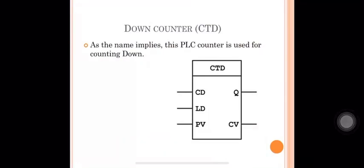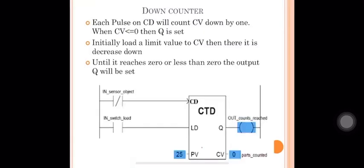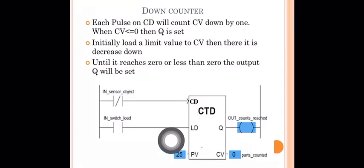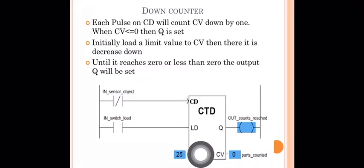Next is the down counter. The down counter is used for counting down — it decrements by one. It has similar parameters as the up counter: PV (preset value), CV (current counter value), and output Q.